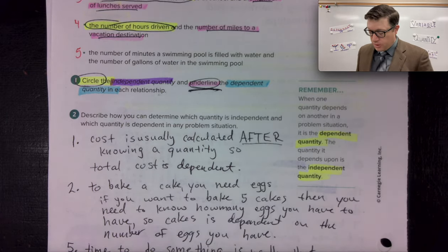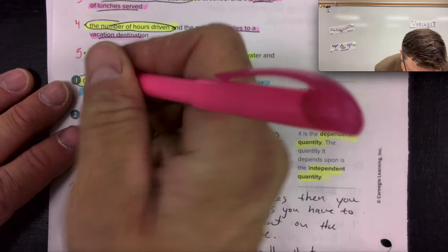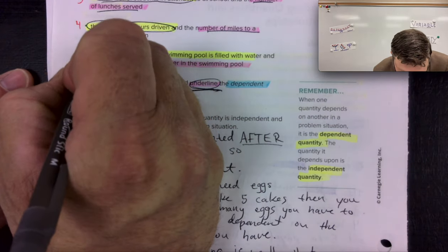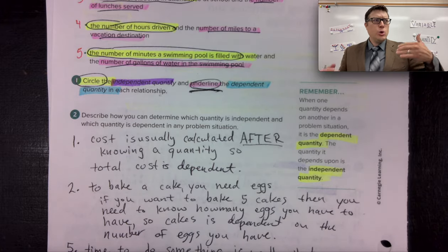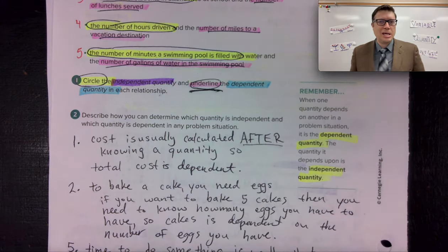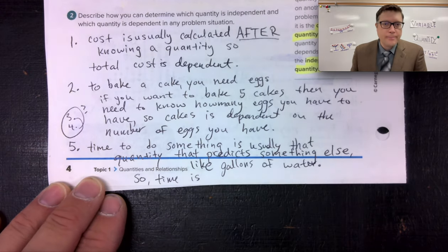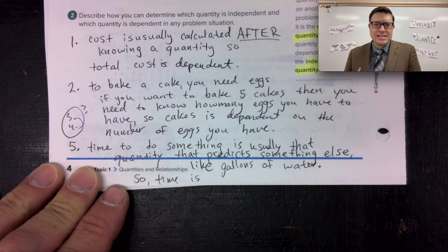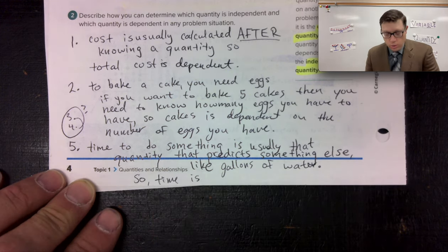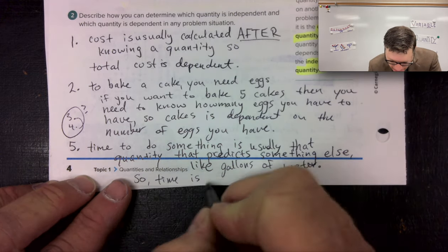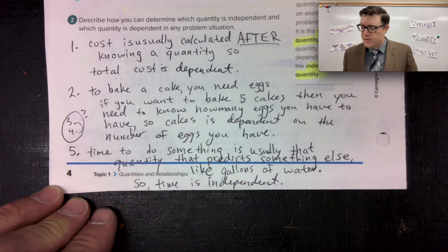Number five: the number of minutes a swimming pool is filled with water and the number of gallons of water in the pool. This is probably the best way to figure out which quantity is independent or dependent — time, the number of minutes, is independent. The time it takes to do something is usually the quantity that predicts something else, like gallons of water. So the time it takes to fill the swimming pool is the independent quantity.